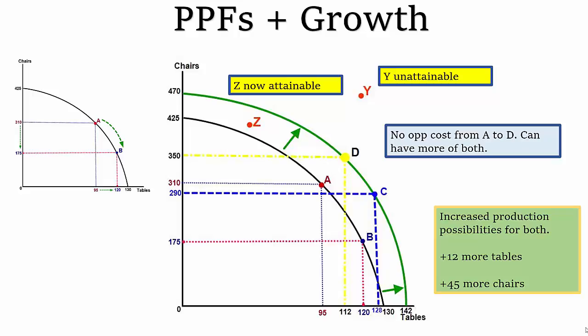One interesting thing to note is that there exists an area of this PPF where you can have more of both goods through growth. So for example let's say we started at point A where we produced 310 chairs and 95 tables. If we opted once the PPF shifted outwards to operate at point D we can have more of both goods. We can have 350 chairs and 112 tables. So you can see that compared to the previous numbers we've got more of both.